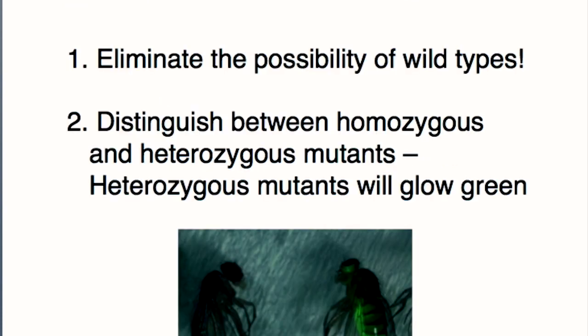Balancer chromosomes are really useful because when you have a homozygous mutant that's lethal, it enables you to maintain them. For us, the balancer chromosome allows us to eliminate the possibility of wild types, and it also allows us to distinguish between homozygous and heterozygous flies. So for our balancer chromosomes, these are the two main strengths of using this type of fly.